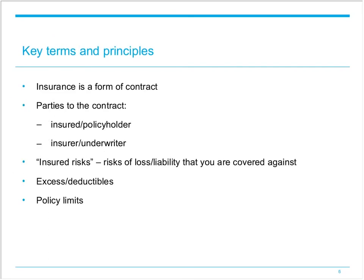Moving on to key terms and principles — some will be familiar, so we'll only spend a couple of minutes on these. Insurance is a type of contract, commonly referred to as a policy, entered into to guard against loss or liability in specified circumstances. The parties are known as the insured or policyholder and the insurer or underwriter. In exchange for premium payments, the insurer compensates the insured if they suffer loss arising from an insured risk. You must ensure that the specific event is an insured risk — if not, the insurer has no liability.